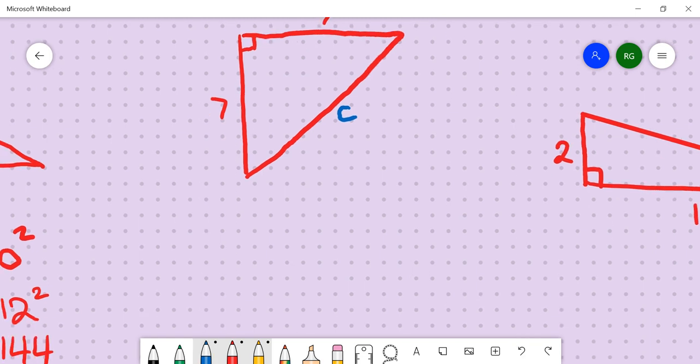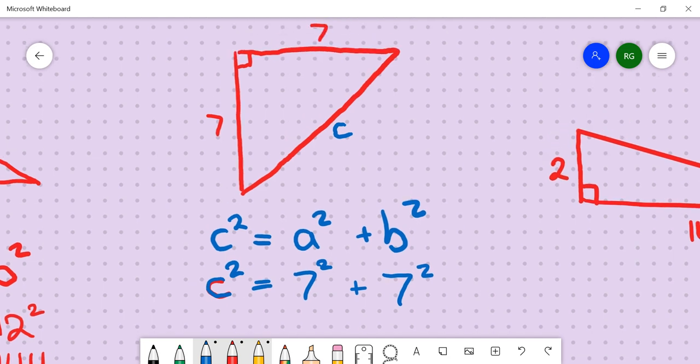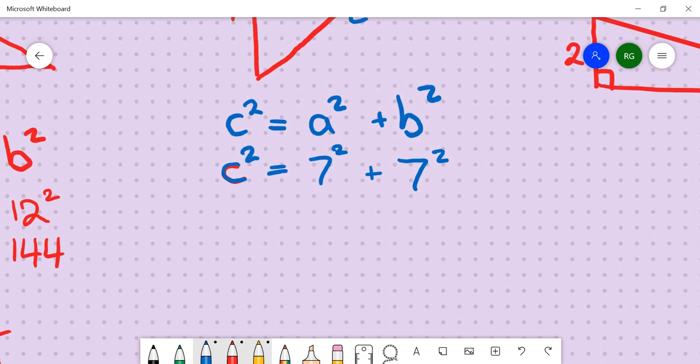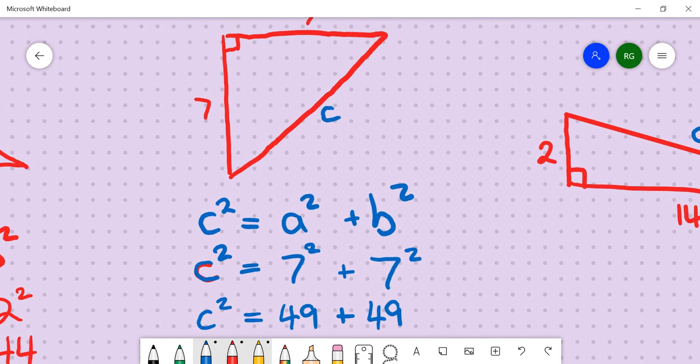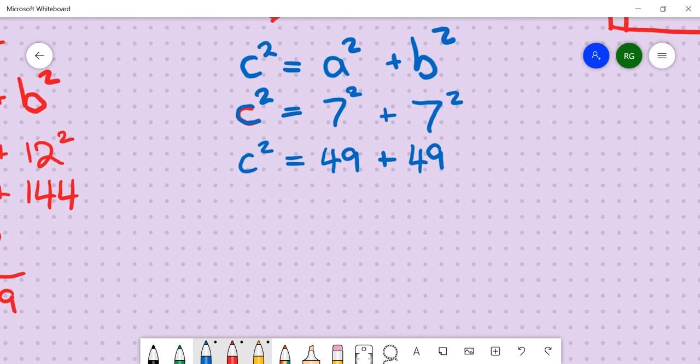we will do the same process. c squared equals a squared plus b squared. c squared equals 7 squared plus 7 squared. c squared equals 49 plus 49. It is also worth noting, what do you think c is going to be, roughly? It's going to be bigger than 7, but not that much bigger. Just looking at the shape.